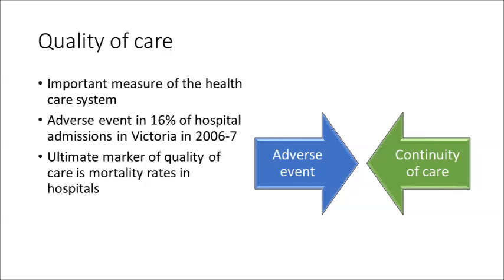Perhaps the ultimate marker of quality of care is mortality rates in hospitals. Therefore, measures of quality include things like adverse events following admission — we're talking about things like infections, death, surgical complications, and so on — and two, continuity of care.